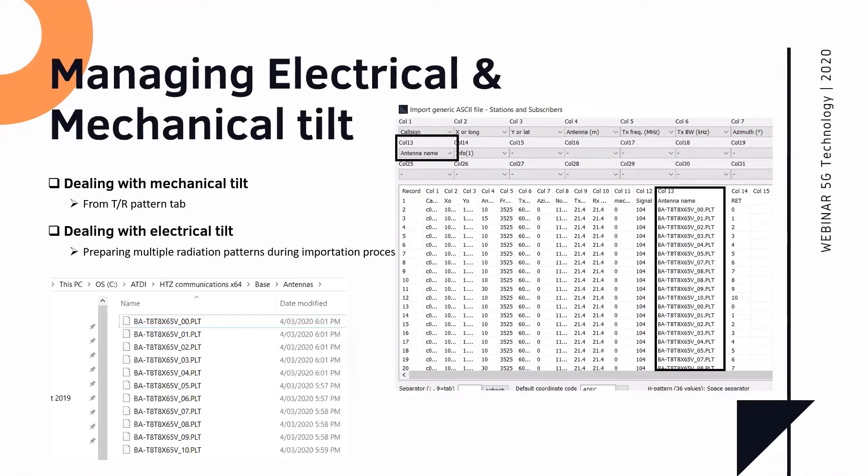So how do you manage electrical and mechanical tilt in the software? So this is very important. You still have electrical tilt guides in 5G and you need to be careful with it. Electrical tilt, you can manage it in the tool. How do we do this? We do this by requesting from the vendor the different radiation patterns at the different tilt values. And then we chuck these antenna patterns in our database. And then we point to it in the importation process. And then the software will attach the right antenna pattern, which is embedding the tilt to the right sector, the right antenna.